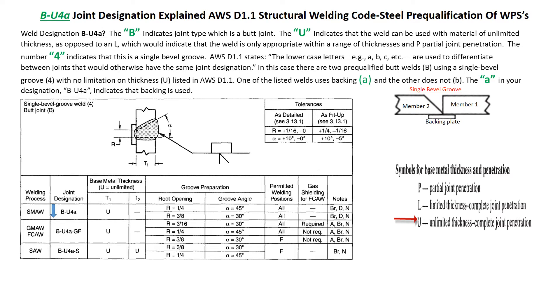And P is partial joint penetration. Following the U is the number 4, which lets you know that this is a single bevel groove.